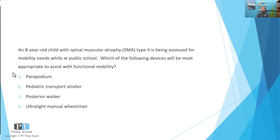Let's dive into our practice question. An eight-year-old child with spinal muscular atrophy, SMA type 2, is being assessed for mobility needs while at public school. Which of the following devices will be most appropriate to assist with functional mobility? The options are: number one, parapodium; number two, pediatric transport stroller; number three, posterior walker; and number four, ultralight manual wheelchair.